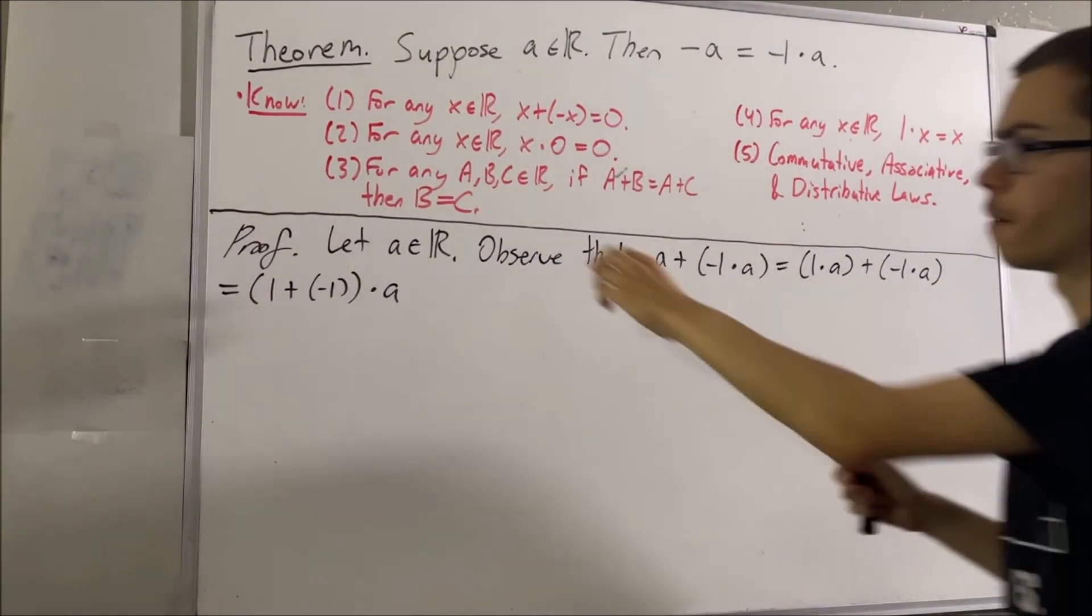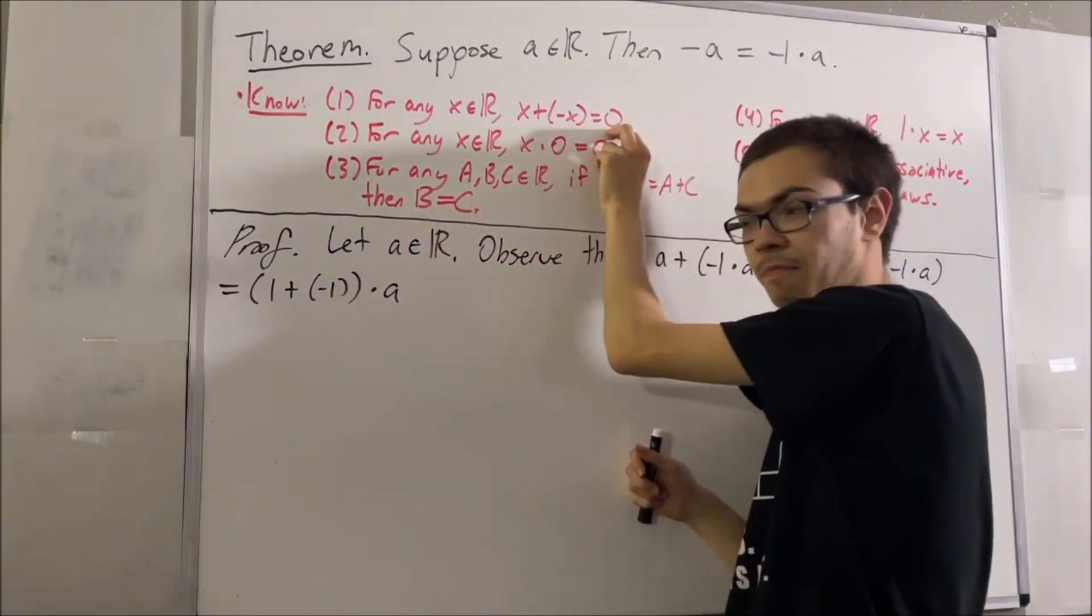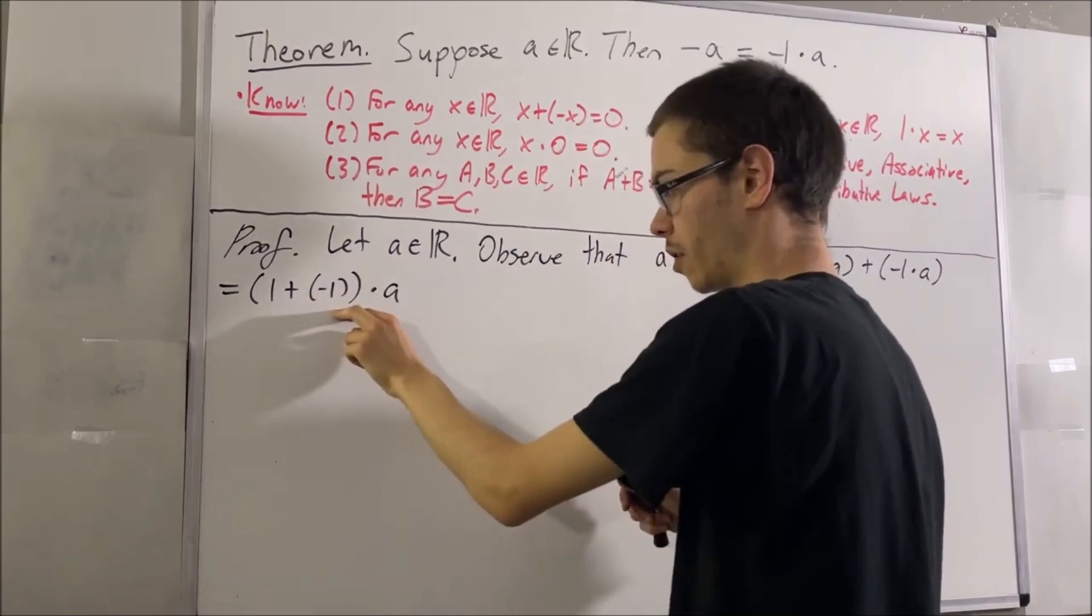But next, from our first fact, we know that 1 plus the negative of 1 is equal to 0. So, we can replace this parenthesis here with 0.